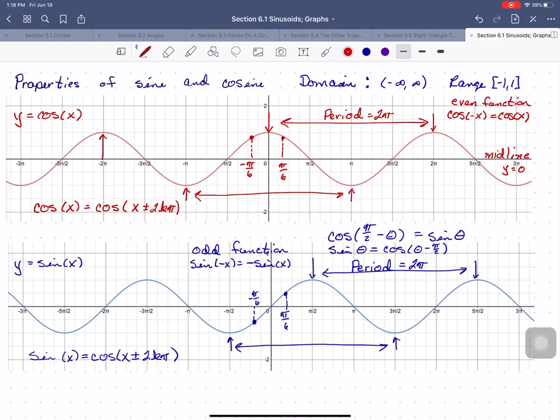The distance from the midline to a peak, or from the midline to a valley, is called the amplitude. For both natural sine and natural cosine, the amplitude is 1.